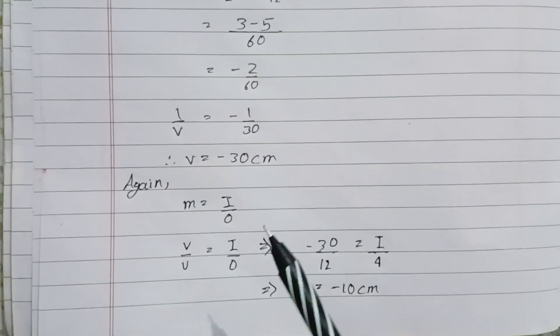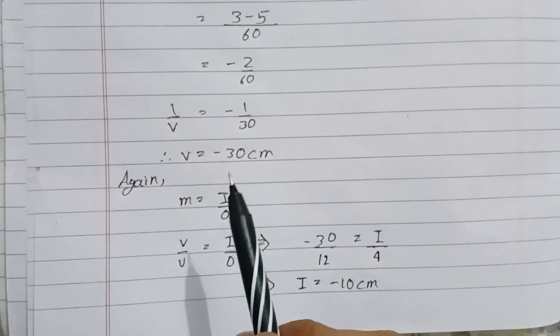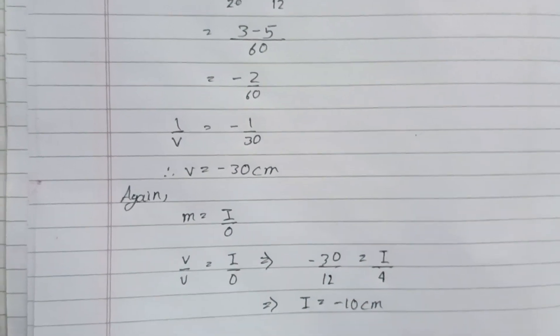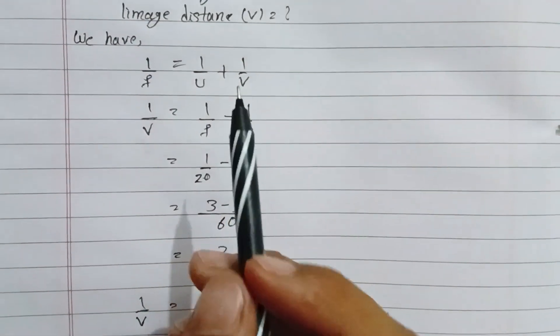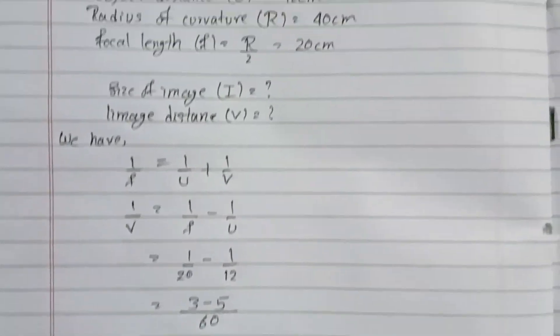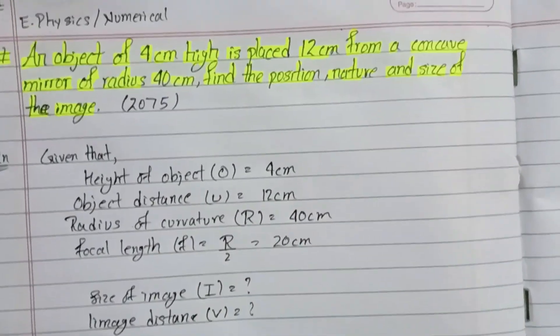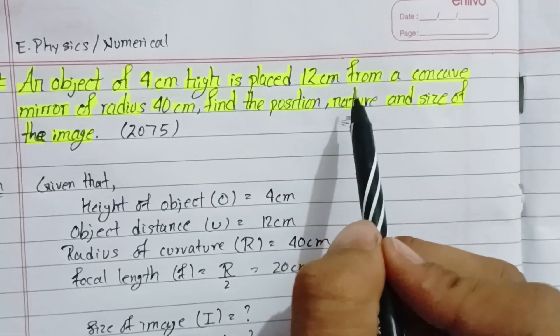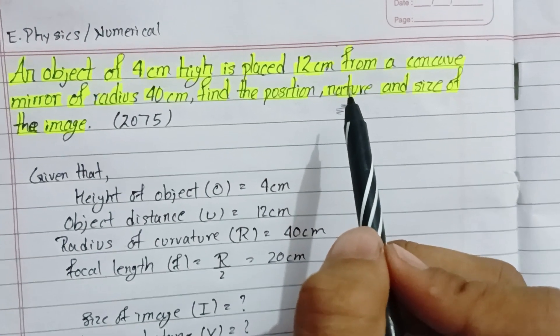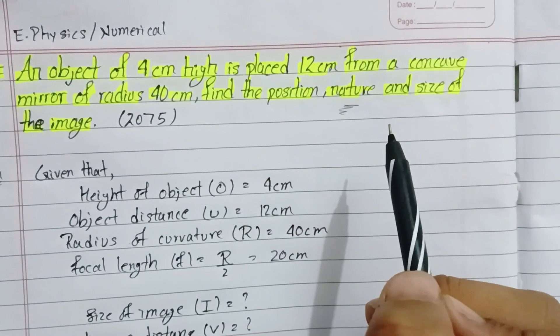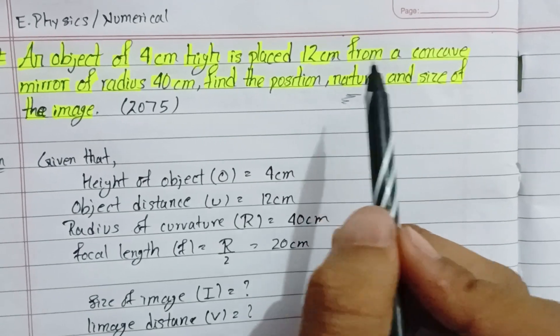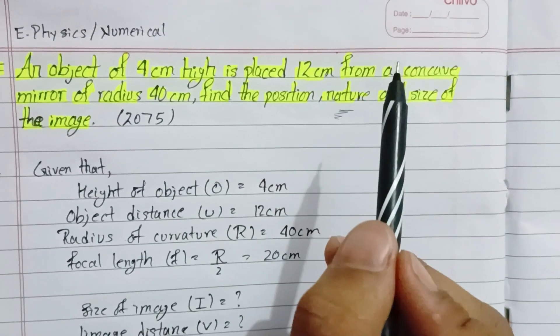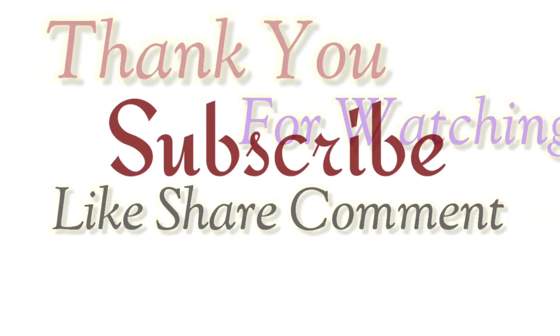Therefore, the image distance is 30 centimeter, and the image size is 10 centimeter. The negative signs indicate that the image is real and inverted. This completes the solution.